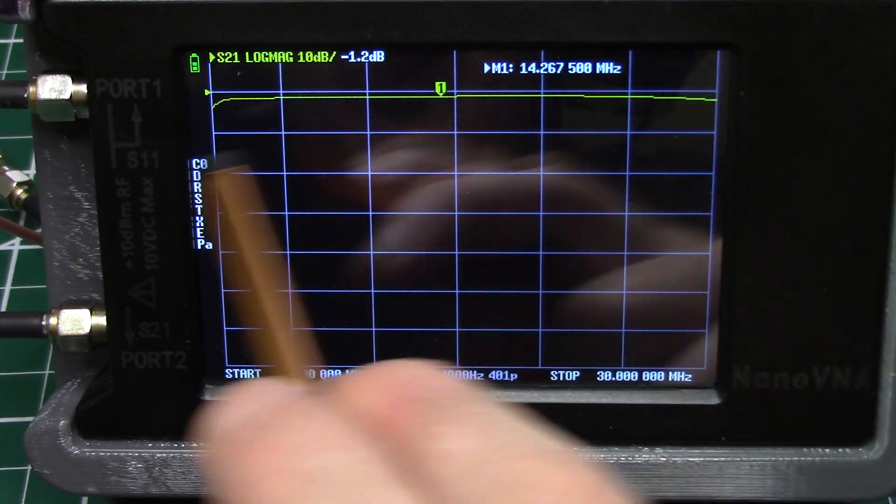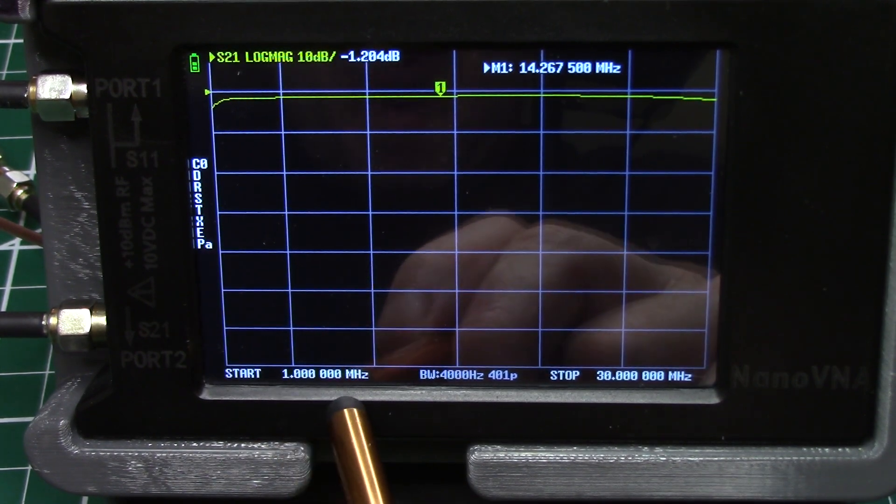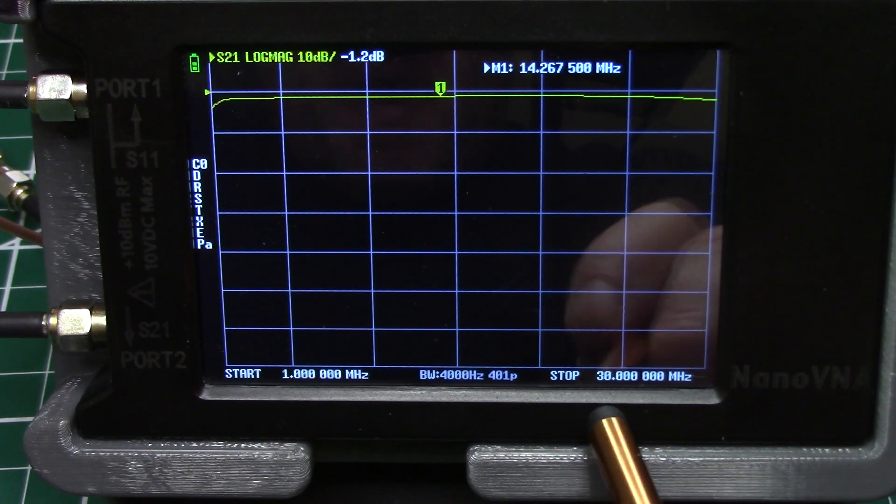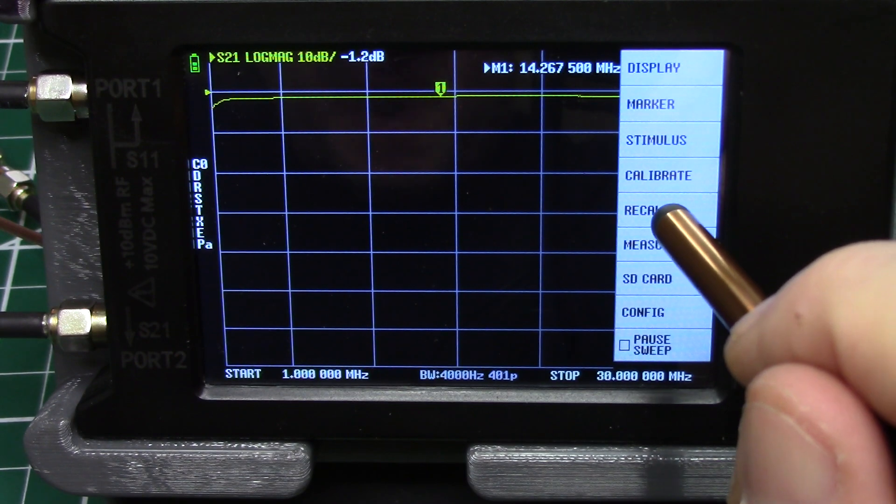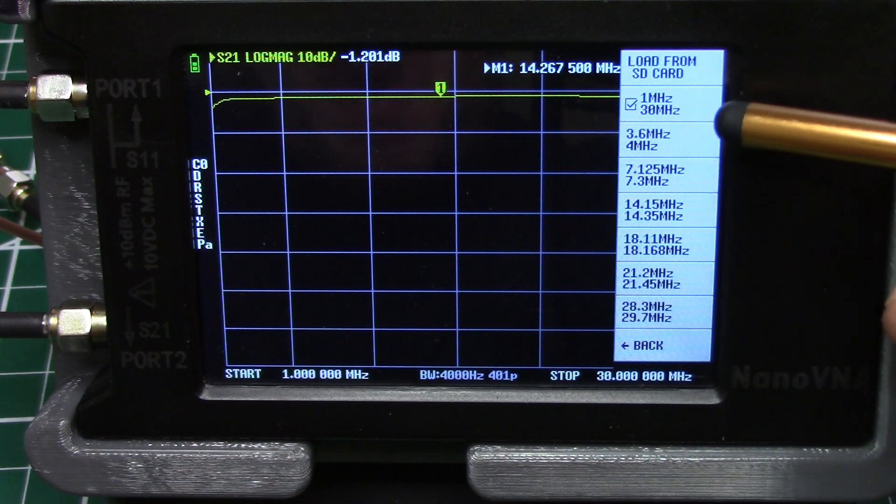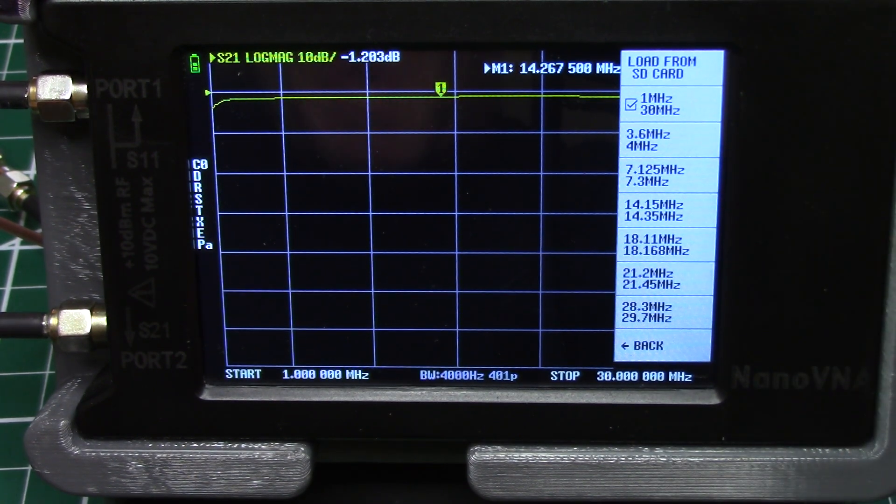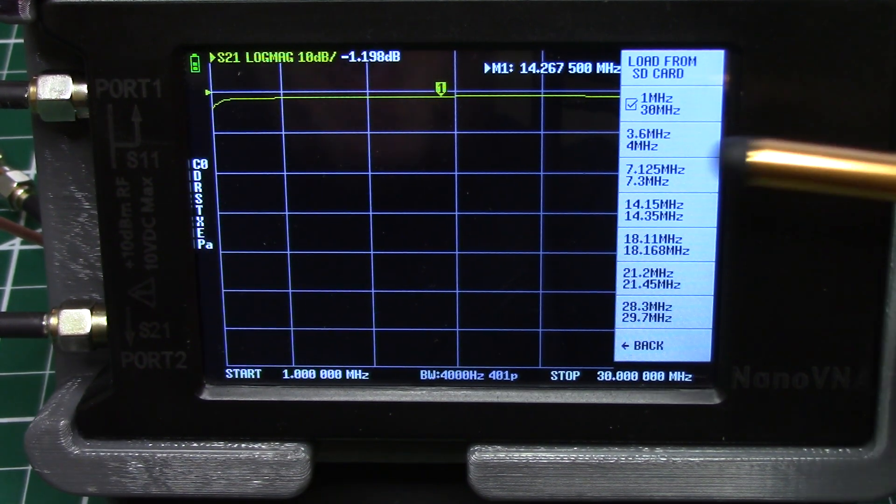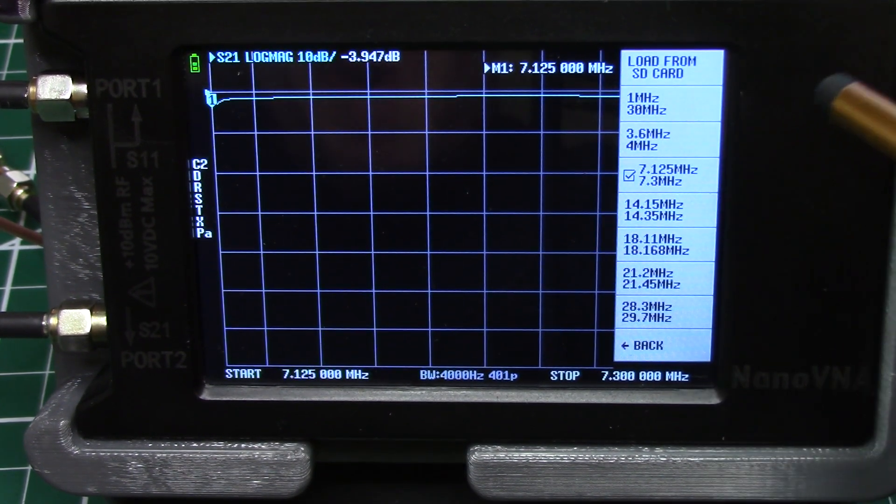Now this whole scan is 1 through 30 megahertz as it shows down here. I've got 1 megahertz as my start frequency, I've got 30 megahertz as my stop frequency. Now what I could do is go to my recall. I've got my different frequency ranges, my bands programmed in and stored so I don't have to recalibrate every time. I calibrated with the cable set up like I run it where I always use these six inch cables and I'm calibrated out to the ends of those cables.